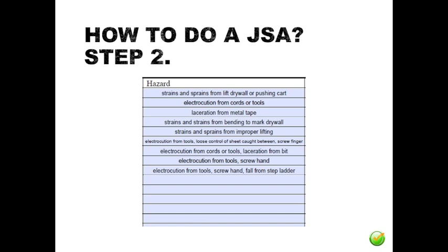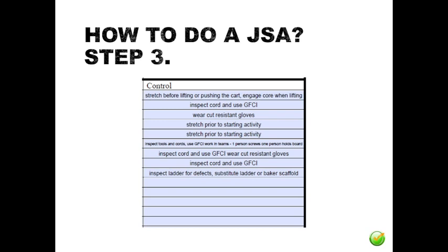Lacerations and falling from ladders when screwing off the top of the sheets. Step three: select the controls. For each hazard, apply the hierarchy of controls to reduce the hazard to an acceptable risk level — meaning a level that if something happens, no one will die or be seriously injured.